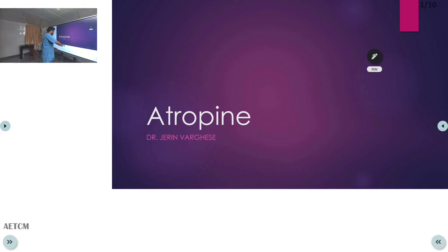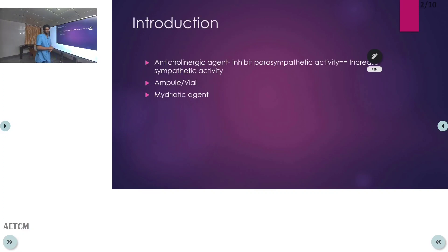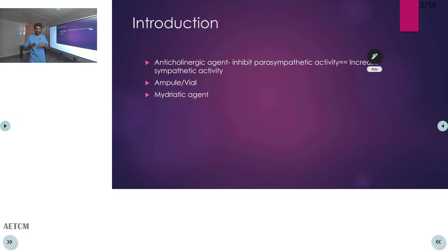Atropine is an anticholinergic drug. Its action is to inhibit the parasympathetic system, causing increased sympathetic overactivity, which increases the heart rate. It is mainly used in cases of bradycardia and for ophthalmic uses where it acts as a mydriatic agent.